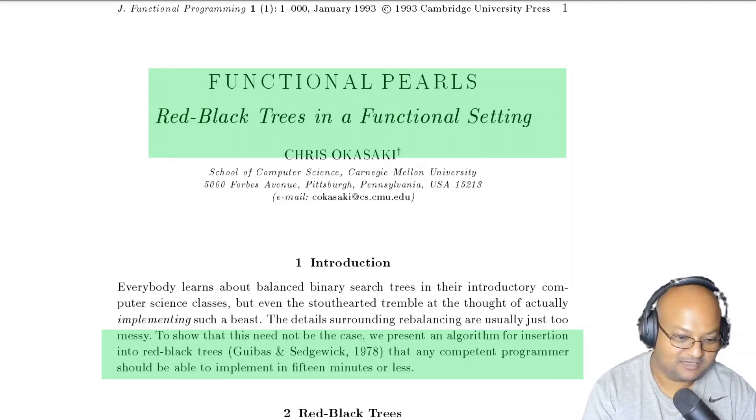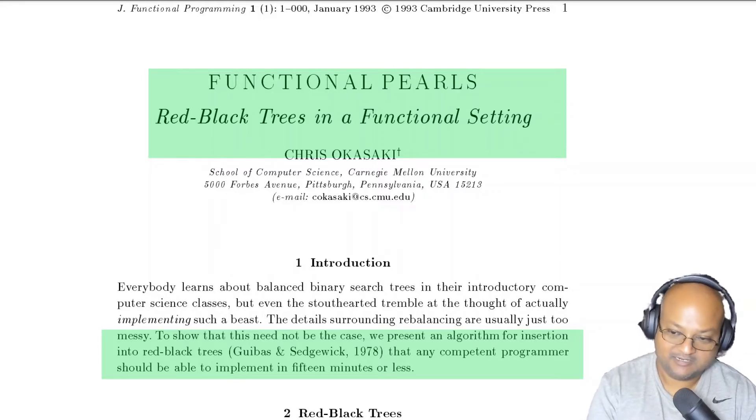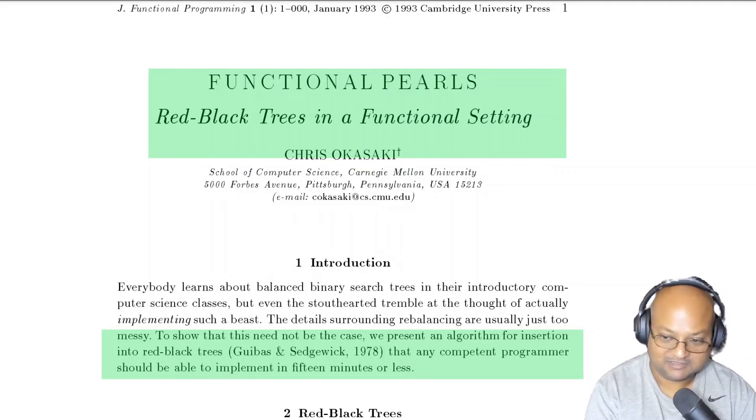I've been playing around with Haskell lately, and as I was doing that, I came across this paper on how to implement red-black trees in a functional manner. This was written back in 1993 by Chris Okasaki, who is pretty famous in functional programming circles for his 1999 PhD dissertation on purely functional data structures.